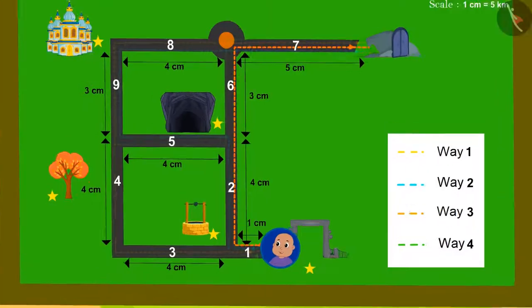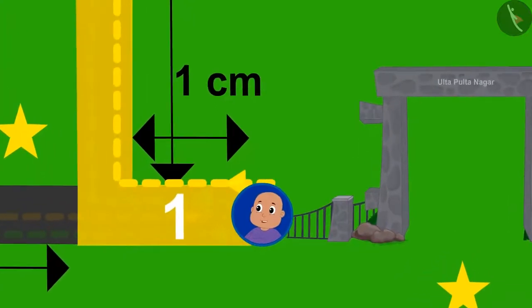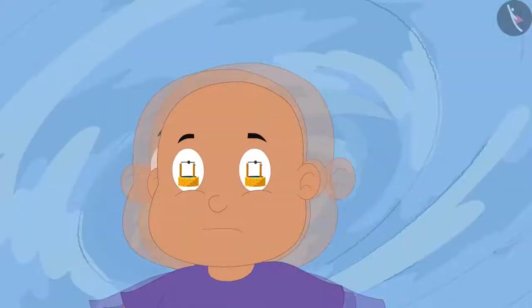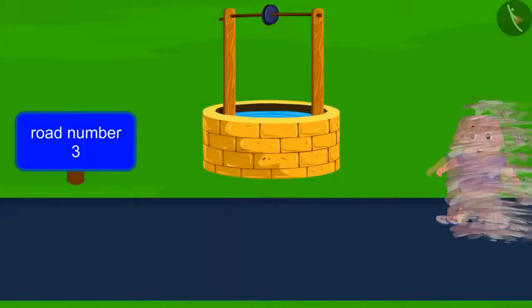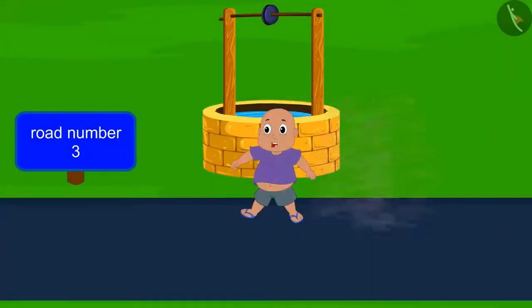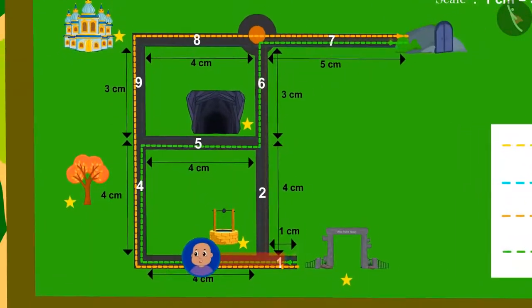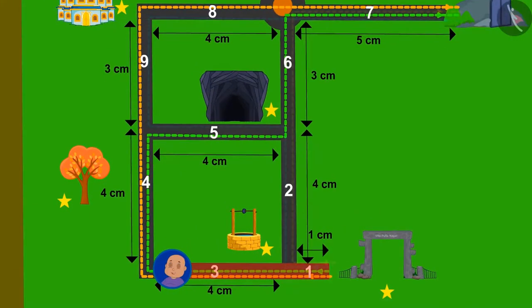Bablu was going towards the shortest path mentioned by us when suddenly he was pulled towards road number 3 towards the magical well. Now, if Bablu has two exit routes, are these two paths at equal distance?